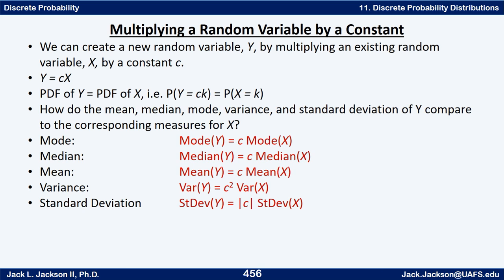Every value is multiplied by c, which doesn't change the order of the data as long as c is positive. The variance turns out to be multiplied by c squared, which means the standard deviation is the absolute value of c times the old standard deviation. So for a positive c: mean, median, and mode are multiplied by c; variance is multiplied by c squared; and standard deviation is multiplied by c.